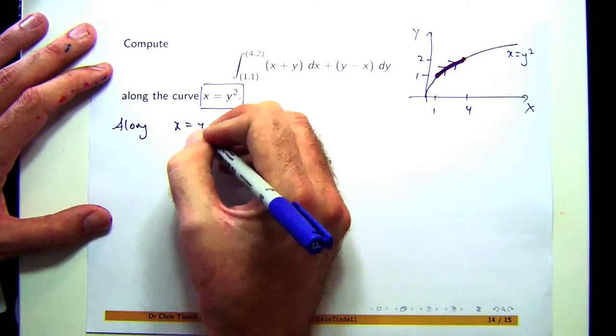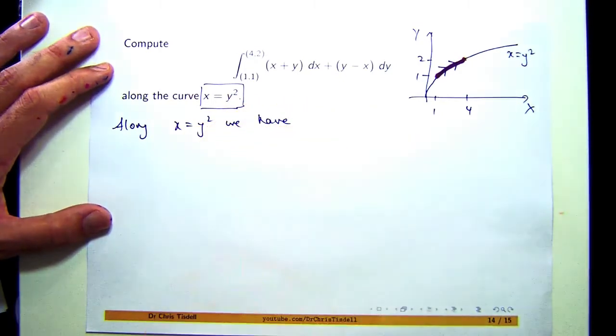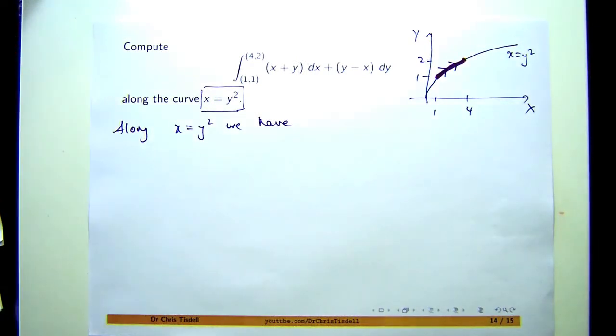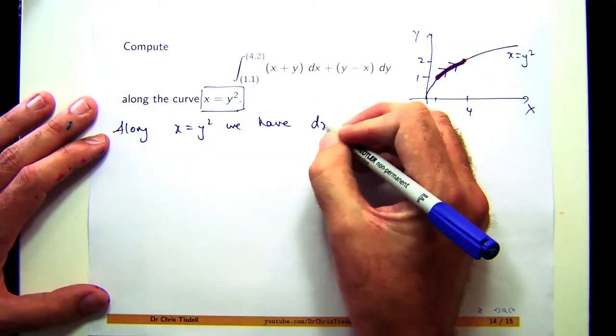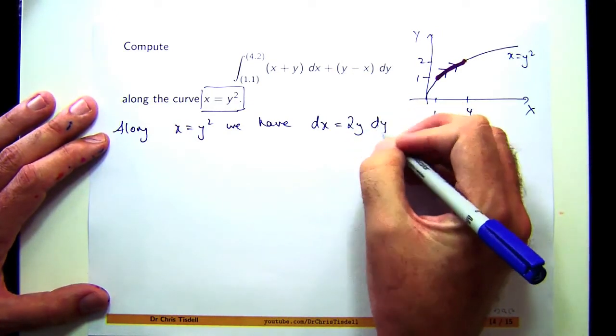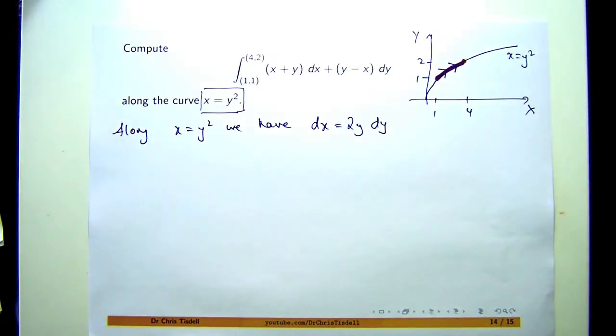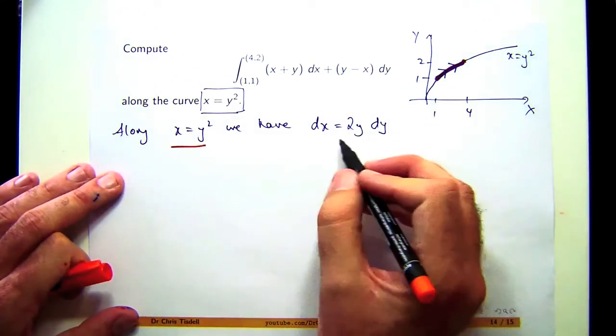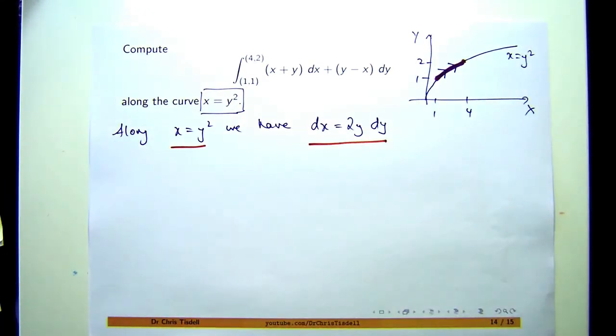So, along x equal y squared, we have, well, let's differentiate. It's going to be dx/dy equals 2y if I differentiate this with respect to y. Well, if I split those differentials apart, you can actually write it in a more useful way. So we've got two things now. We've got this along this line, and we've got a relationship between the differentials. Let's make a substitution and get it in terms of one variable only. That's our aim. Because at the moment, there's two variables and two differentials in that integral. With this substitution method, we can break it down to something that we know.